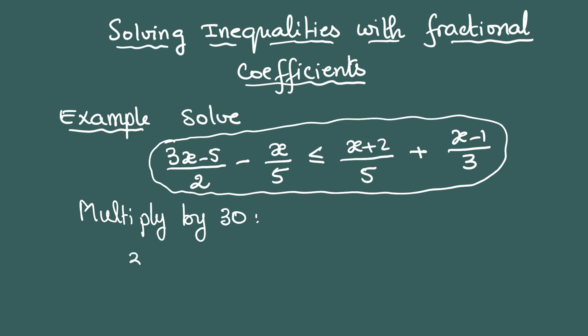That will give us 30 times (3x-5)/2 minus 30 times x/5 less than or equal to 30 times (x+2)/5 and 30 times (x-1)/3.